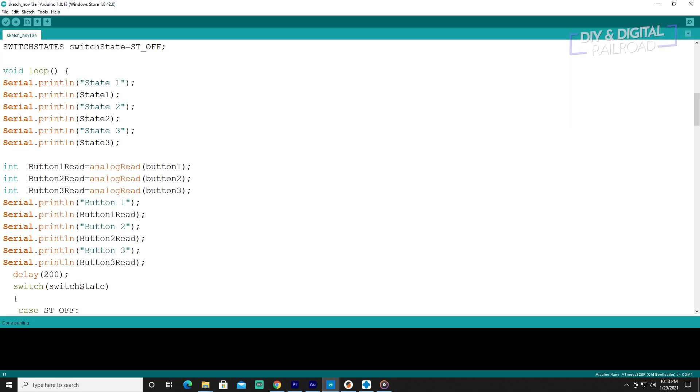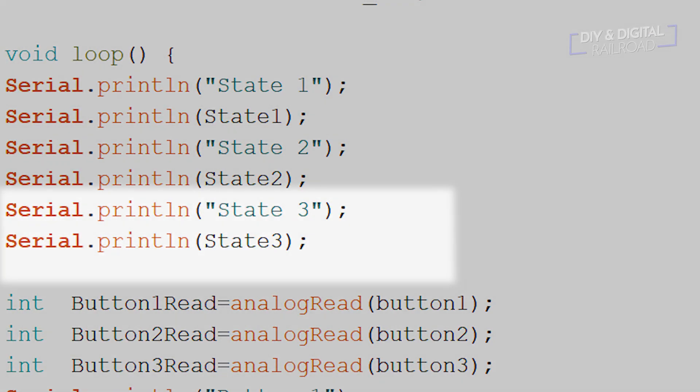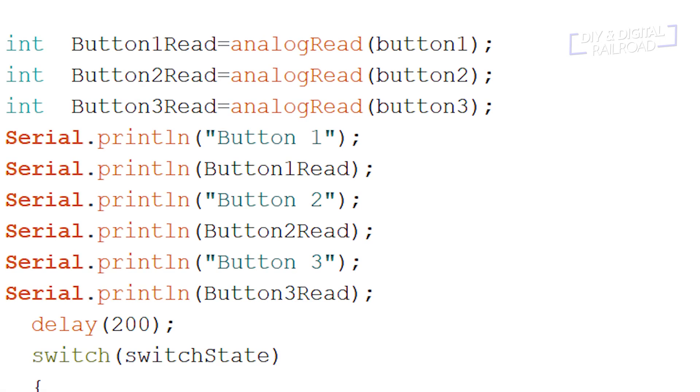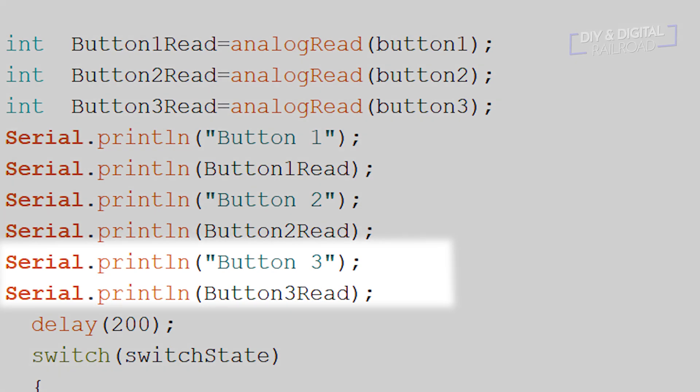In our loop we'll start off with our serial print lines. You'll need to add serial.println quotations state3 and serial.println state3. You'll then need to add an integer int button3read = analogRead button3. And then for more serial.println you'll need to add serial.println button3 and serial.println button3read.